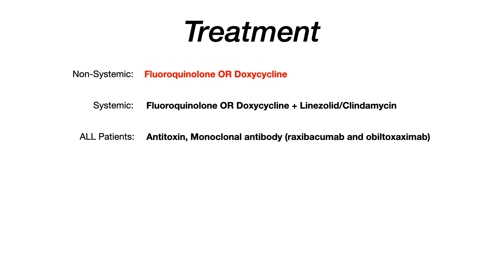Treatment is beyond the scope of Step 1 and Level 1, but briefly: for non-systemic anthrax, give a fluoroquinolone or doxycycline. For systemic anthrax, give the same plus combination therapy with either linezolid or clindamycin. Regardless of the type of anthrax, every patient can also be given antitoxin or monoclonal antibodies — either raxibacumab or obiltoxaximab.